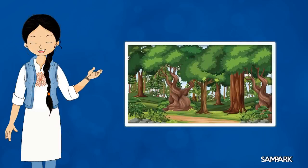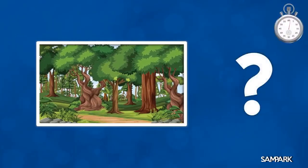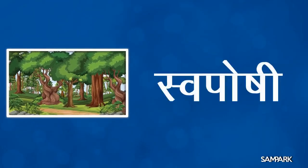बच्चों, ये हैं पेड़-पौधे जो अपना भोजन स्वयं बनाते हैं। क्या आप जानते हैं कि ऐसे जीवों को क्या कहते हैं? इन्हें स्वपोषी कहते हैं। स्व मतलब अपना यानी खुद का, और पोषी यानी पोषण करने वाले, तो अपना पोषण स्वयं करने वाले हुए स्वपोषी।